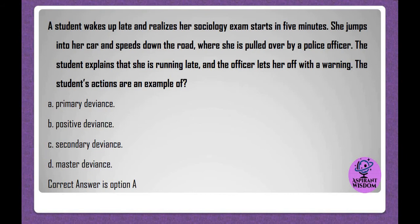A student wakes up late and realizes her sociology exam starts in five minutes. She jumps into her car and speeds down the road, where she is pulled over by a police officer. The student explains that she is running late, and the officer lets her off with a warning. The student's actions are an example of: A. Primary deviance. B. Positive deviance. C. Secondary deviance. D. Master deviance. Correct answer is option A.